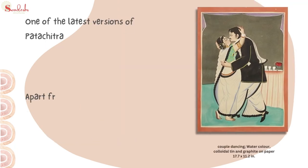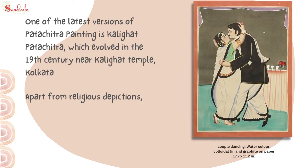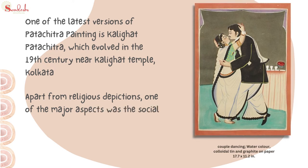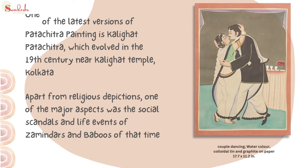One of the latest versions of Pato Chitra paintings is Kalighat Pato Chitra, which evolved in the 19th century near Kalighat Temple, Kolkata. Apart from religious depictions, one of the major aspects was the social scandals and life events of Zamindars and Babus of that time.